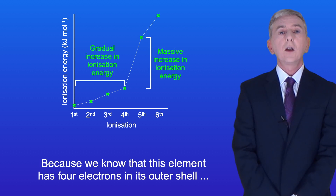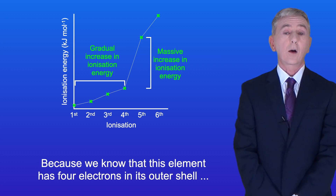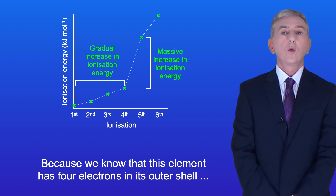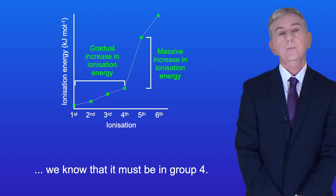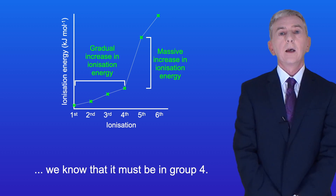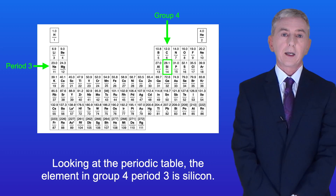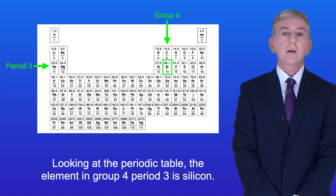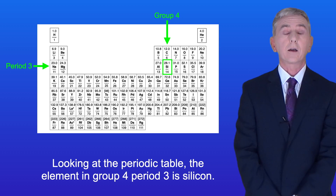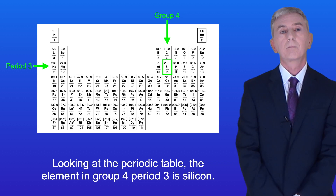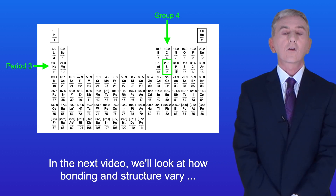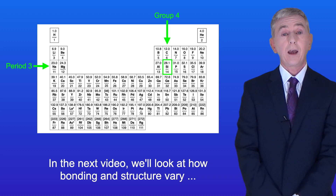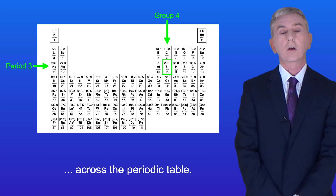Because we know that this element has four electrons in its outer shell, we know that it must be in group 4. Looking at the periodic table, the element in group 4 period 3 is silicon. In the next video, we look at how bonding and structure vary across the periodic table.